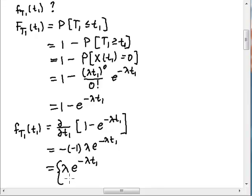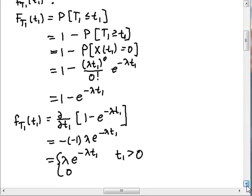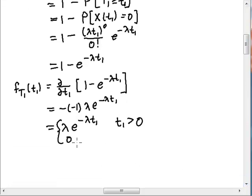And this is true for t1 greater than zero. I've been assuming that the interval was from zero to t1, therefore t1 must be positive and zero otherwise. So this is my PDF of the duration t1, the time until the first arrival time.